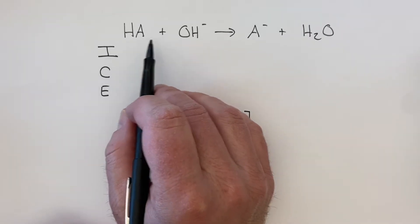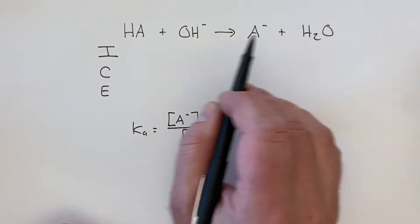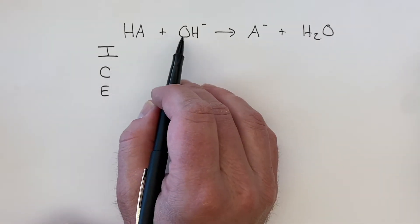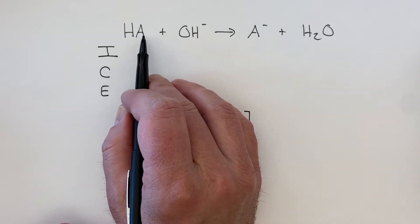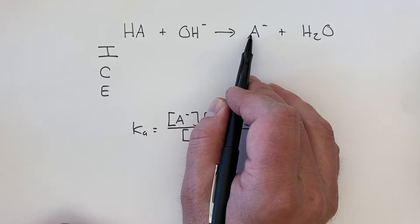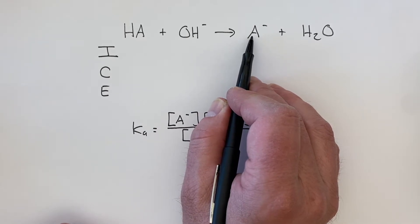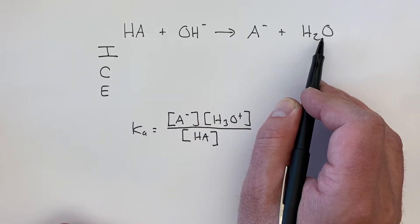Here I have an equation showing the titration or the reaction of OH minus with the weak acid. We're keeping it very general here because this works for any of the acids, and it creates the anion, the conjugate base, and some water molecules.